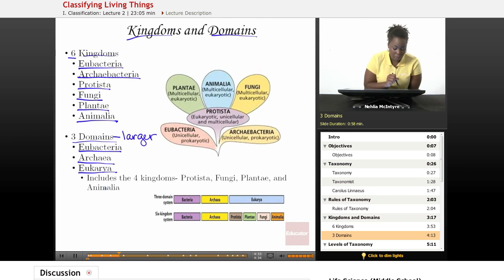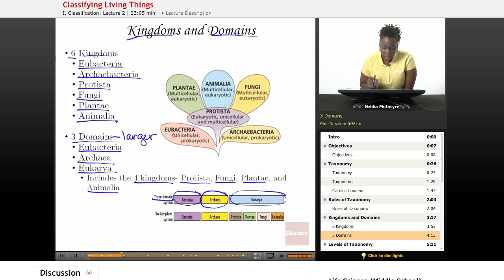Now, the eukarya domain includes the following four kingdoms: the protista kingdom, the fungi kingdom, the plantae kingdom, and the animalia kingdom. If you are to look at this diagram, you'll see that there's the three domain system here with the bacteria or eubacteria domain, archaea domain, and the eukarya domain. However, the six kingdom system includes the bacteria, archaea or archaebacteria, protist, plantae, fungi, and animalia all can fall under the eukarya domain.